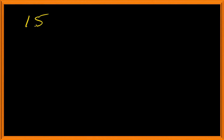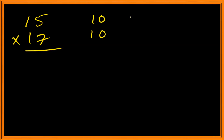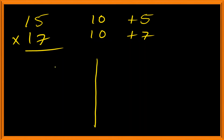Let's take another example: 15 multiplied by 17. The base is 10. The deviation for 15 is plus 5 and the deviation for 17 is plus 7. For the left part, 15 plus 7 equals 22, or equivalently 17 plus 5 equals 22.